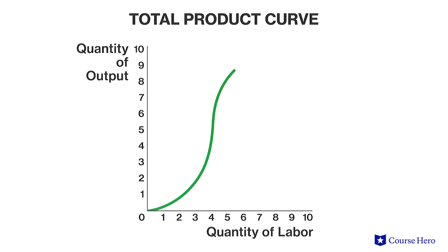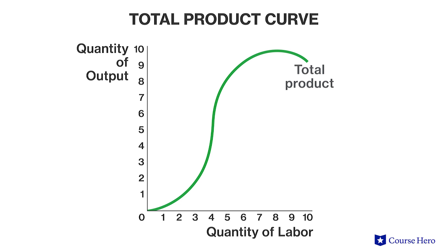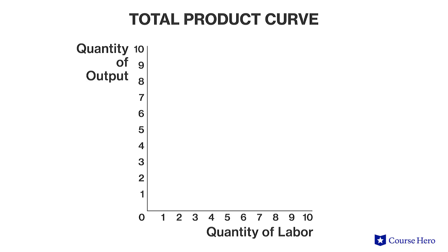A total product curve is a graphical representation of the way a firm's total output varies during the short-run, as one or more inputs are held fixed and one input, usually labor, is variable. Using labor as an example, as the amount of labor increases — more workers are hired or existing workers work more overtime — output will change. More workers means the firm could produce more products. If the firm uses no labor at all, it can't produce any products, so the total product curve starts at the origin.